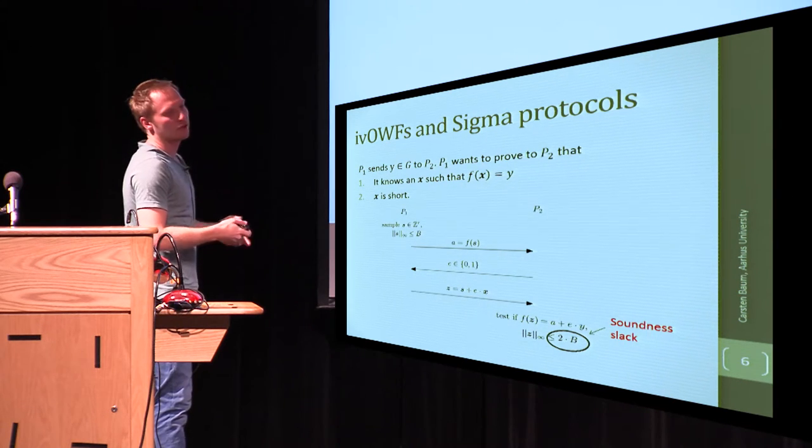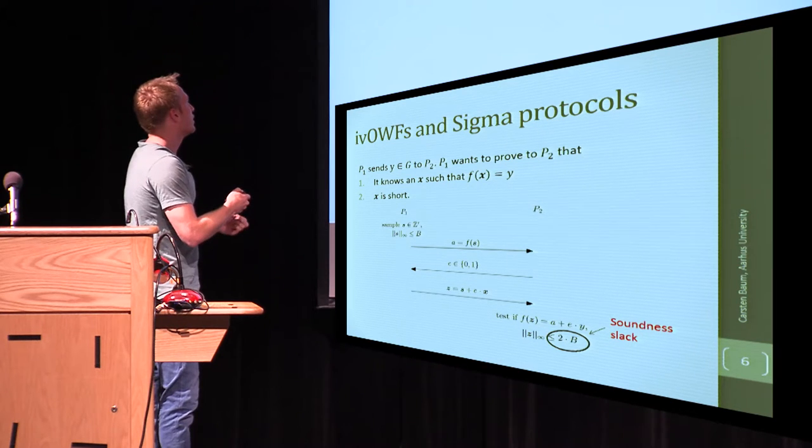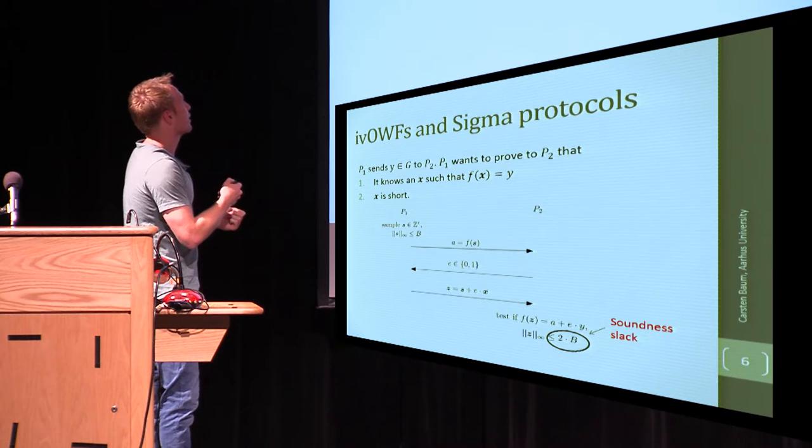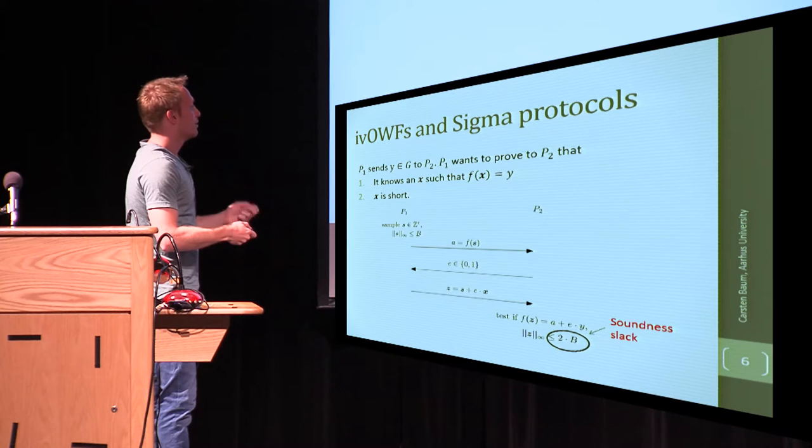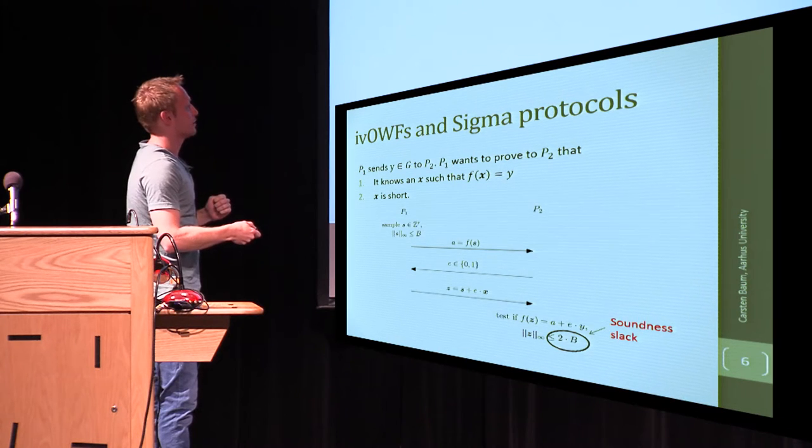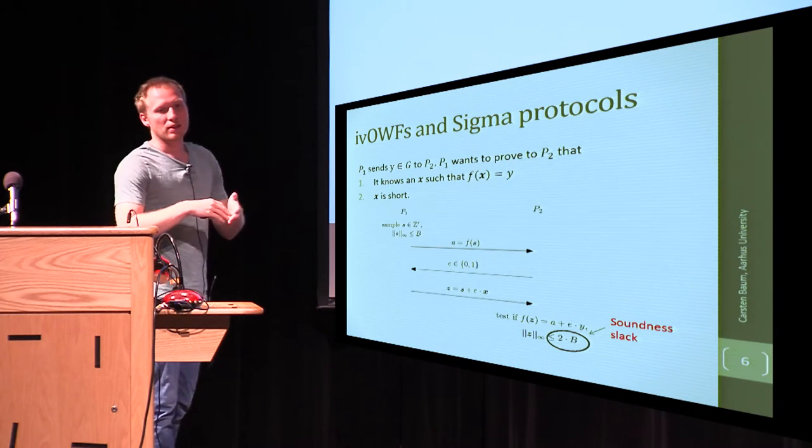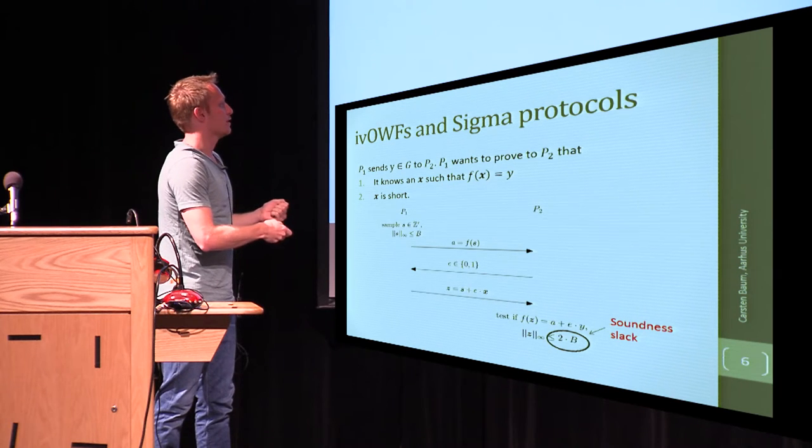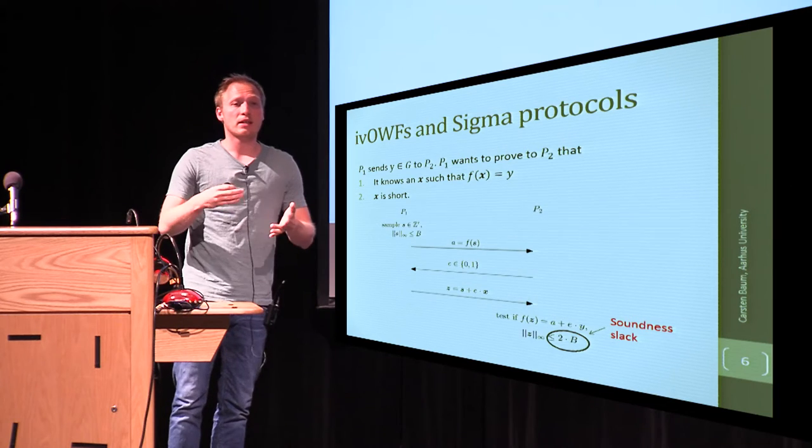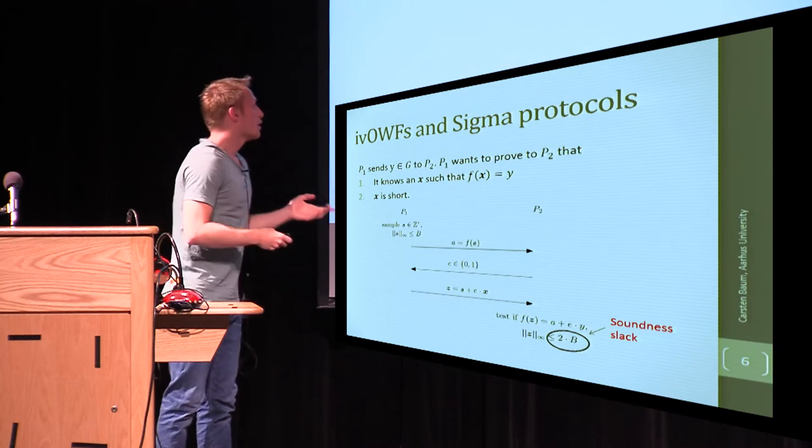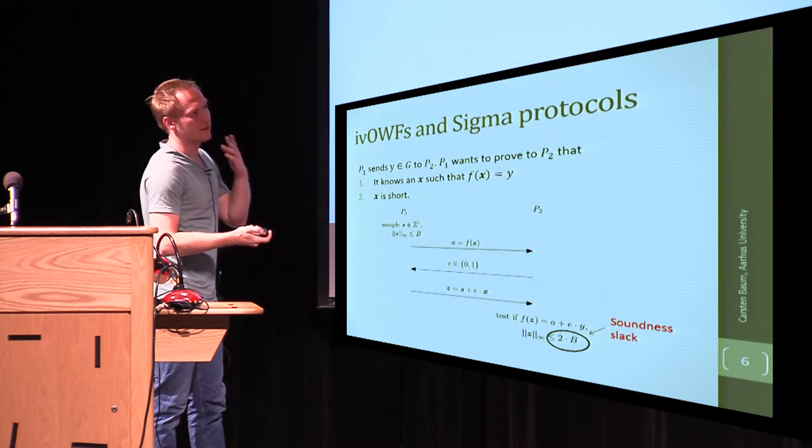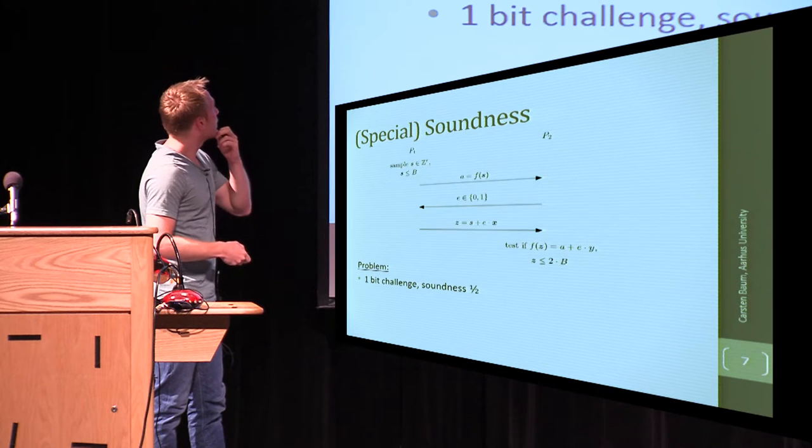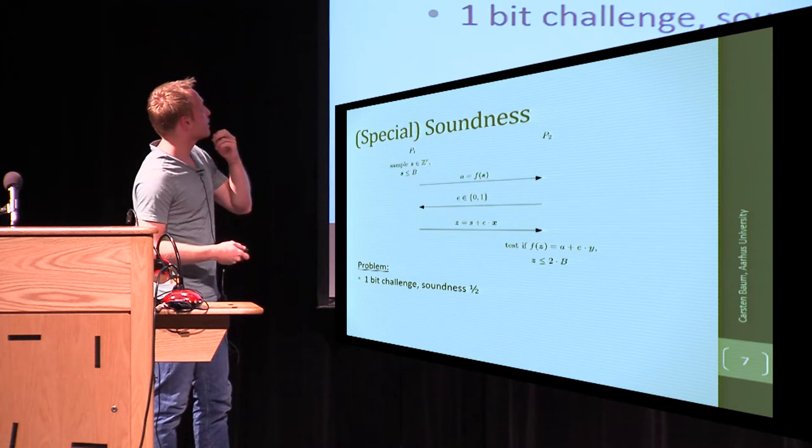In addition to what we have in normal sigma protocols here, since this is smaller than B, or X is supposed to be smaller than B, the sum of the two must be smaller than 2B. It will turn out that what we can verify in the end and how far this is away from the original bound is actually very crucial. And we call this the soundness slack in our work.